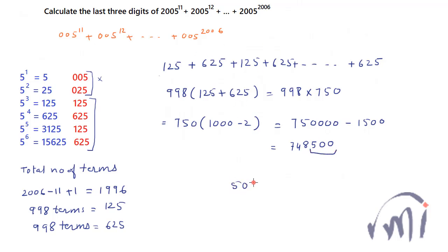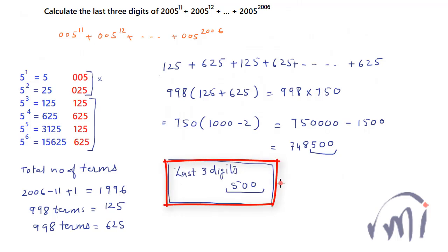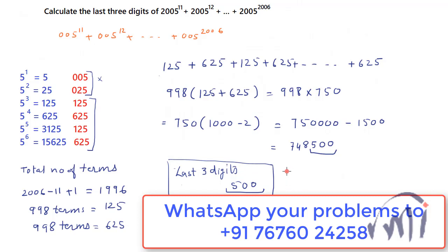So the last three digits of that expression will actually be 500. This is the answer for this problem. If you also have any problem for which you need a solution, you can send your problems to the number given below and I'll try to solve them. If it is worth making a video I'll make a video and post it on MathSmart. Thank you for watching, keep watching MathSmart, subscribe, and please don't forget to press the notification bell so you get notified about new upcoming videos. Thank you so much.